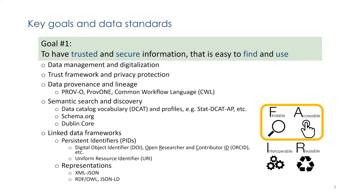Our vision can be summarized in two goals. The first goal is to have trusted and secure information that is easy to find and use. For that, we need data management and digitalization, especially in the form of automated processes. This includes solid data governance and stewardship together with modern IT infrastructure, complemented with a well-defined trust framework and privacy protection techniques.